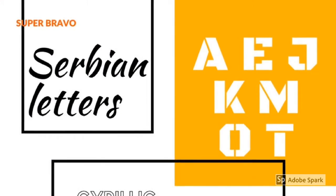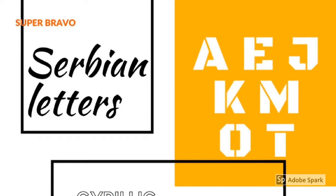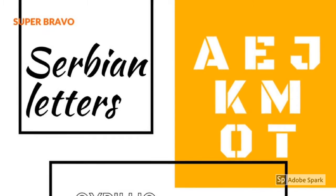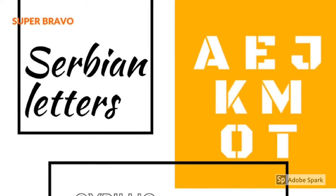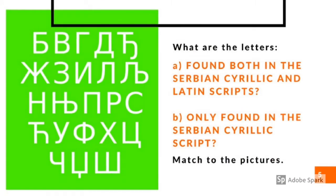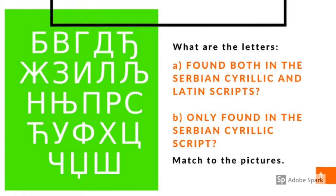And now the Cyrillic script. In the yellow box you can see the letters that are equal in the Serbian Cyrillic and English script. The green box shows letters that don't exist in English but are from the Serbian Cyrillic script.